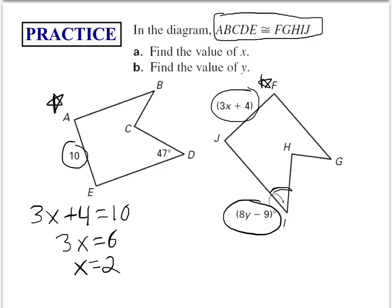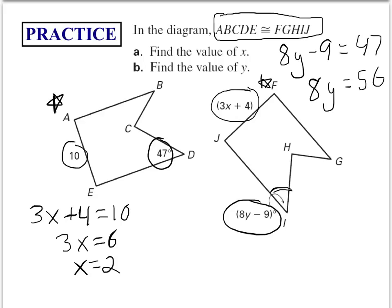For Y, I find where Y appears — it represents an angle on the shape. The corresponding angle on the other shape is 47 degrees. So I write the equation: 8Y minus 9 equals 47. Adding 9 gives 56, then solving for Y gives Y equals 7. We found the corresponding parts, wrote equations, and solved for the variables.